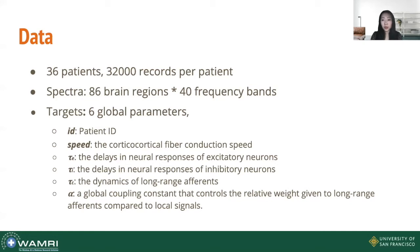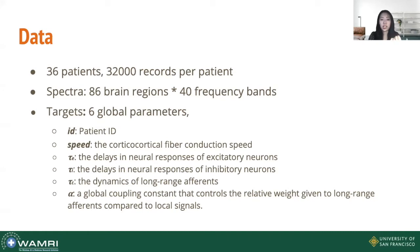Here are the parameters we selected. First, we have the patient ID, which is very important for measuring the generalization ability of our model. We also have the speed, which represents the cortical-cortical fiber conduction speed. Also, tau_e and tau_i, which represent the delay in neural responses of excitatory and inhibitory neurons. Additionally, alpha, which captures the dynamics of long-range inference, as well as a global graph constant.